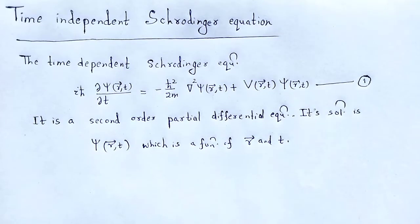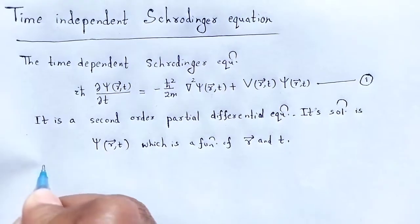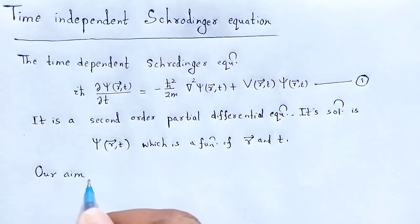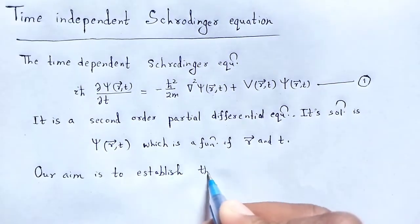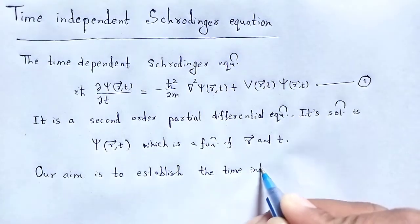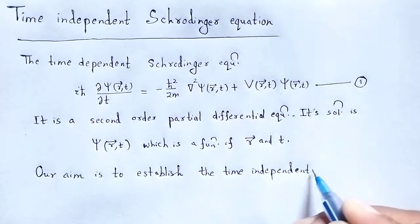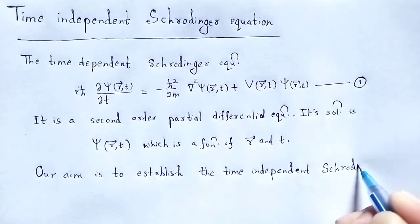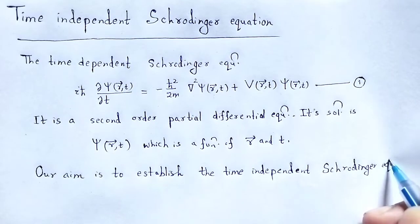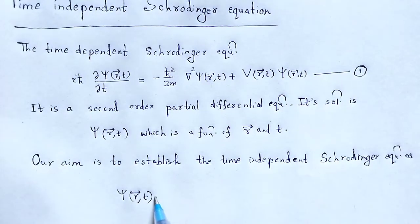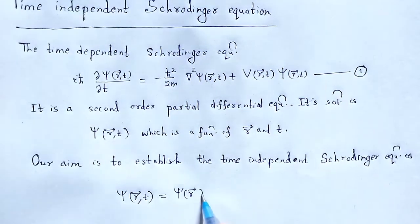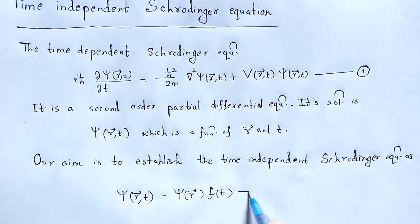Our aim is to establish the time-independent Schrödinger equation by using the time-dependent Schrödinger equation. So let us consider the wave function ψ(R,T) as a product: ψ(R,T) = ψ(R) · f(T). That is equation number 2.